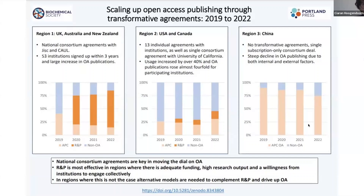In summary, the study emphasizes some key points. RMP has provided real benefits and value for institutions, particularly in the UK, where so far this year we virtually have no APCs coming in — almost everything is going OA via RMP — and in Australia and New Zealand as well. Consortia have been really key in getting institutions on board, because we're a small publisher. And also, RMP is only effective where there is adequate funding and existing research output. In other regions where this isn't the case, alternative models are needed to complement RMP. That's it for me, thank you very much for listening.